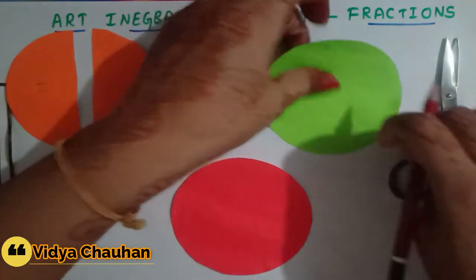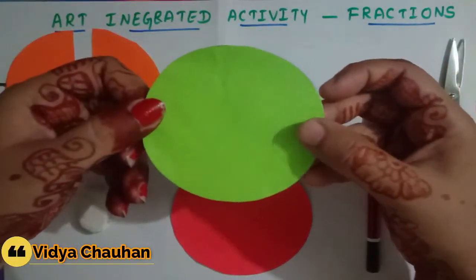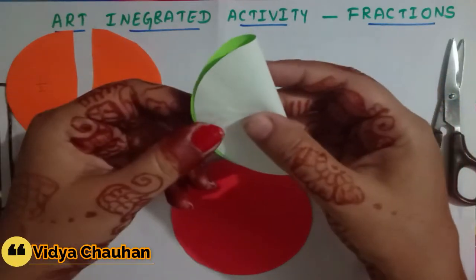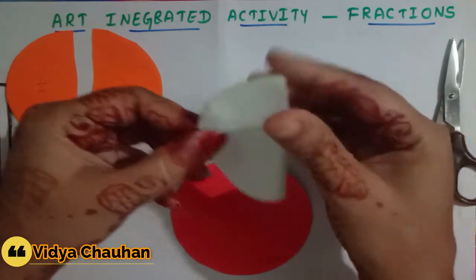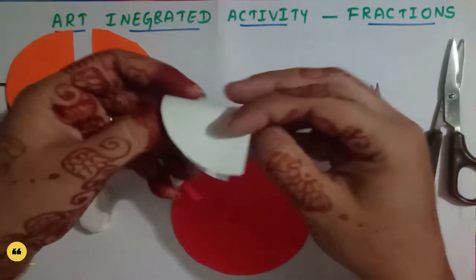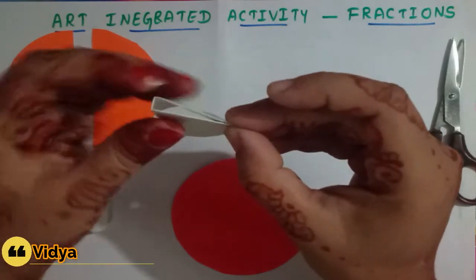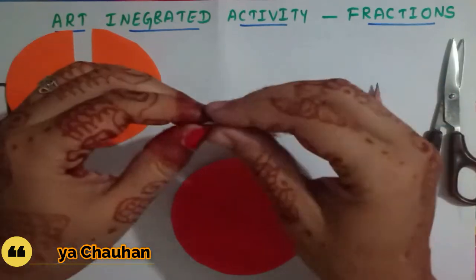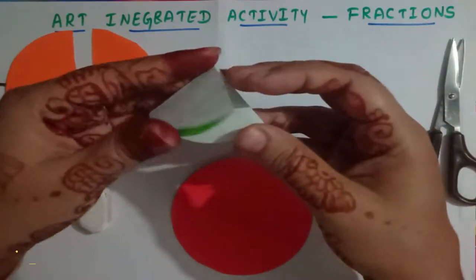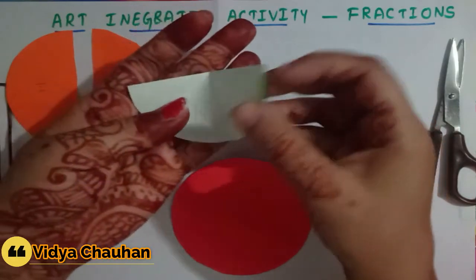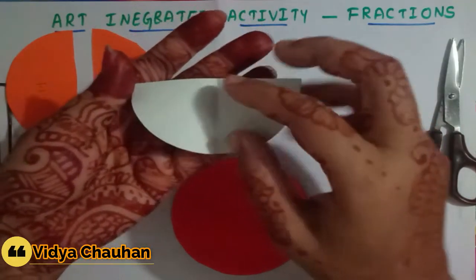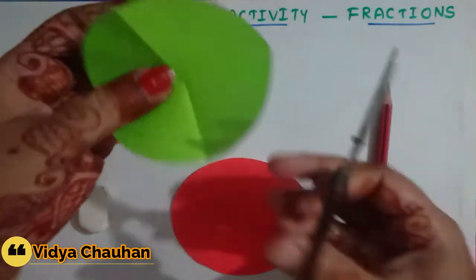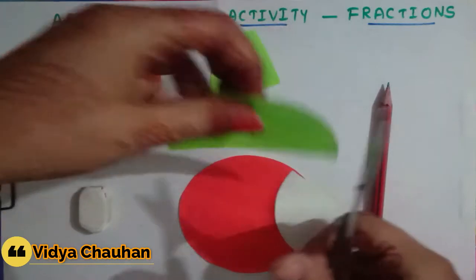Now coming to the second whole — I am going to divide this circular sheet into four equal parts. Folding it in half and then one more half gives us four equal parts. Let us cut it using the scissors.